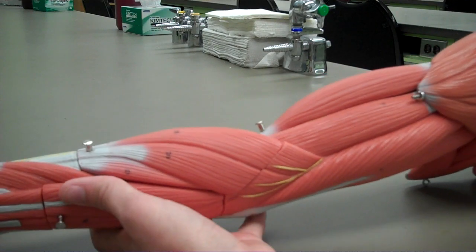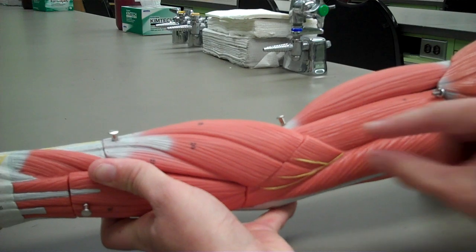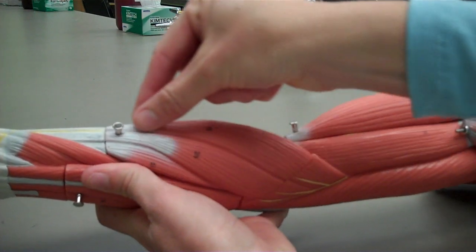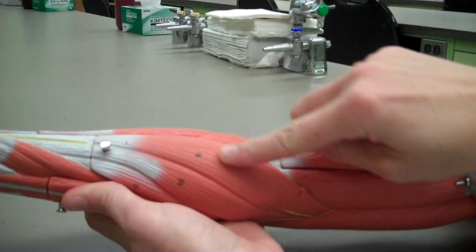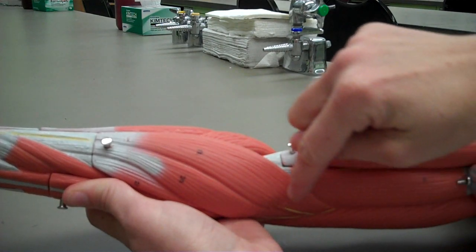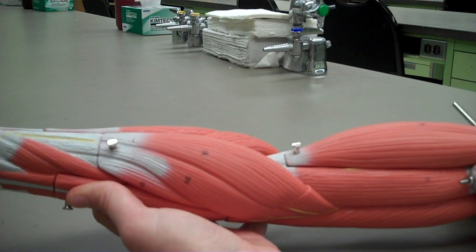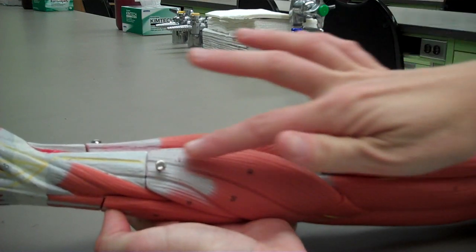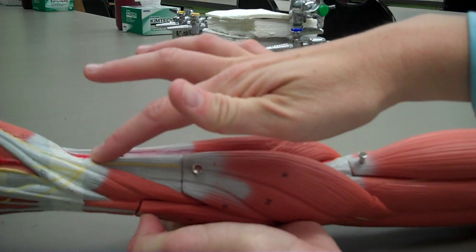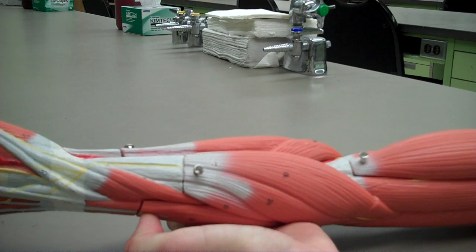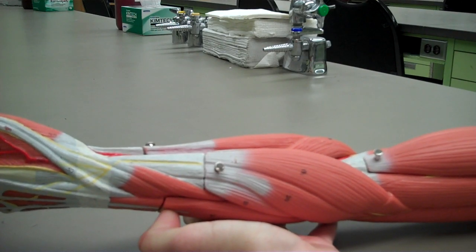The next muscle that acts at the elbow is this muscle called the brachioradialis. The brachioradialis has its origin on the lateral supracondylar ridge of the humerus, and its insertion is on the styloid process of the radius. Its action is to flex the forearm.